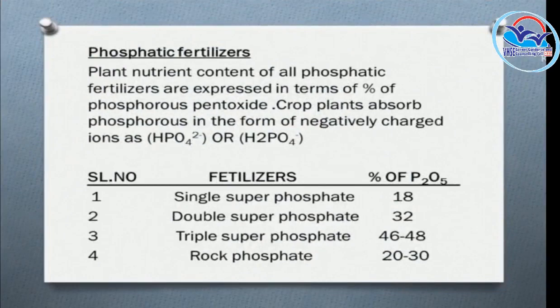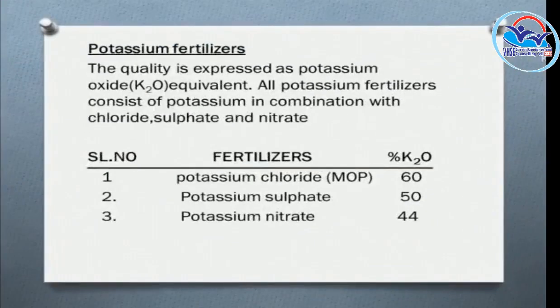Phosphatic fertilizers include single superphosphate (SSP), double superphosphate at 33% P₂O₅, and triple superphosphate at 46–48% P₂O₅. Potassium fertilizers include potassium sulfate, which supplies potassium to plants.